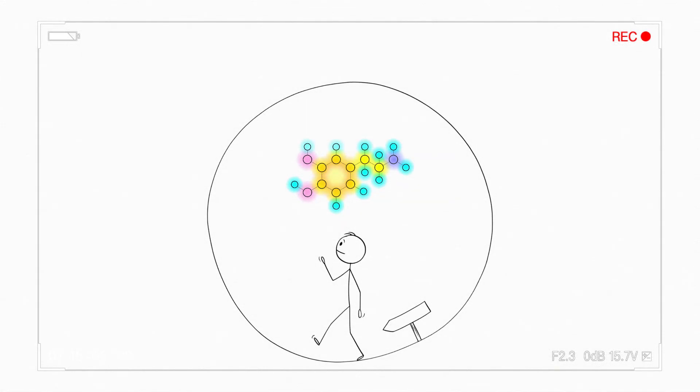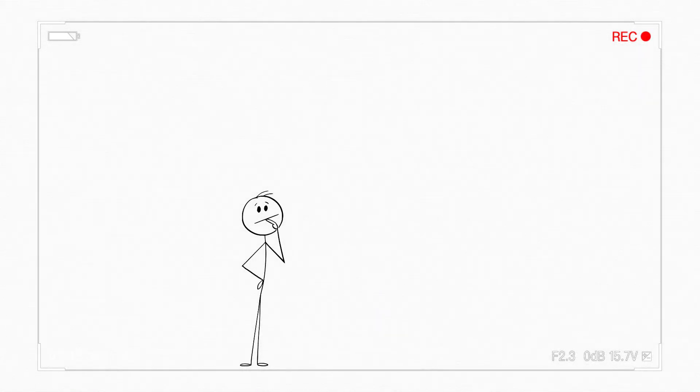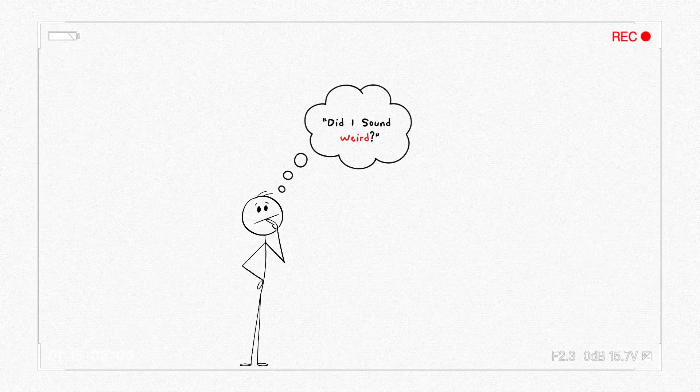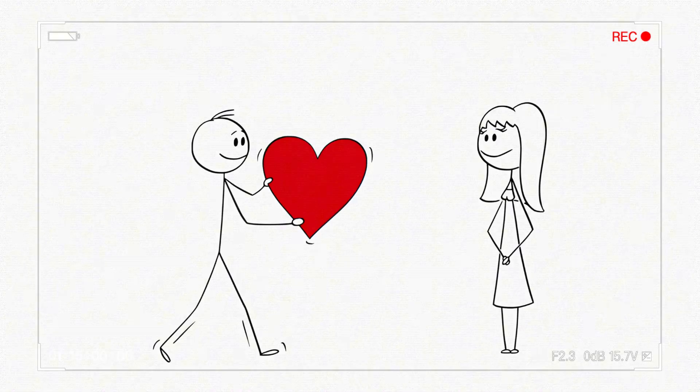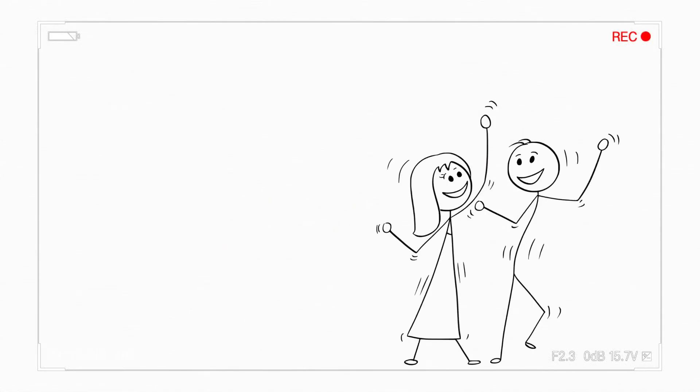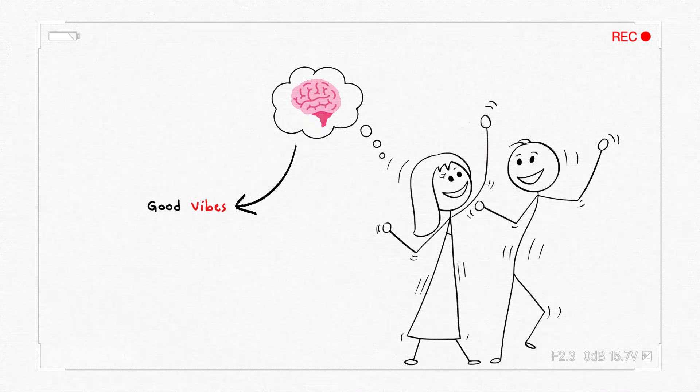This is the same brain loop behind addictions. Except, this one blushes and overthinks text replies. Hack it. If you want someone to like you more, be around during fun or exciting moments, so their brain links you to the good vibes.